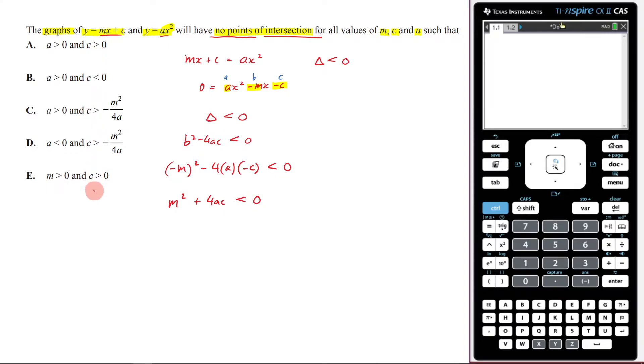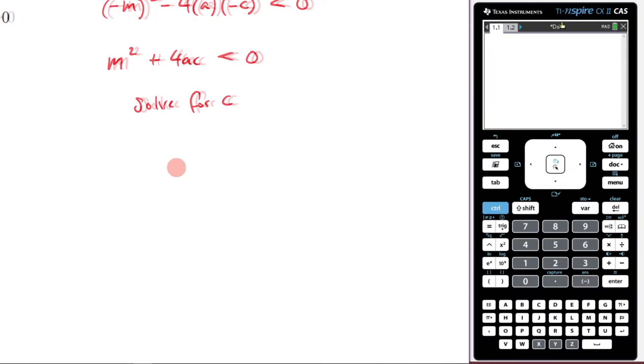If we look through our options here, you can see that every one of them has what c is. So now what I'm going to do is I'm going to solve for c. So I'm going to go 4ac is less than negative m squared.